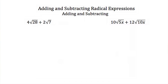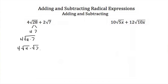What happens when we try to add and subtract radical expressions that don't have like radicals? Here we have 4 square roots of 28 plus 2 square roots of 7. We're going to have to simplify them to get like radicals. For 4 square roots of 28, I can break 28 into 4 and 7. So this is 4 times the square root of 4 times 7, which I can write as 4 times the square root of 4 times the square root of 7, plus 2 square roots of 7. Now I have like radicals — a square root of 7 in both terms.